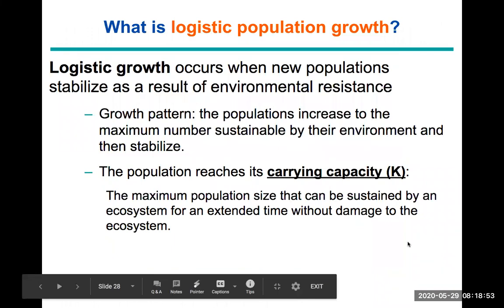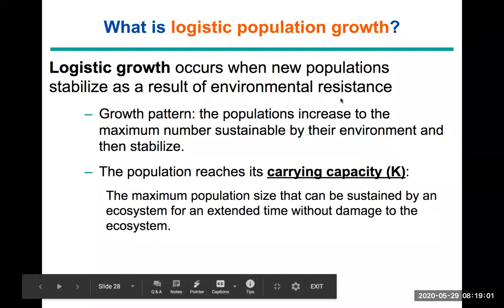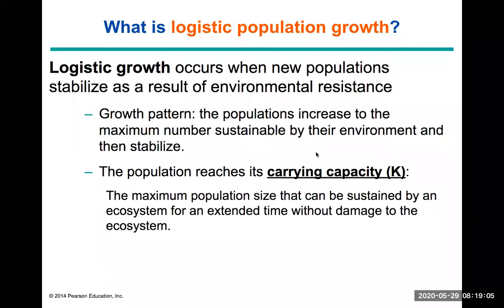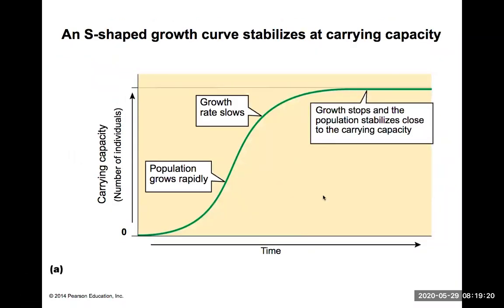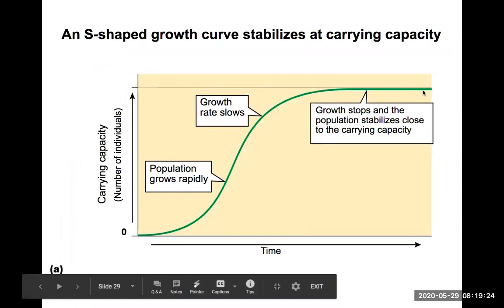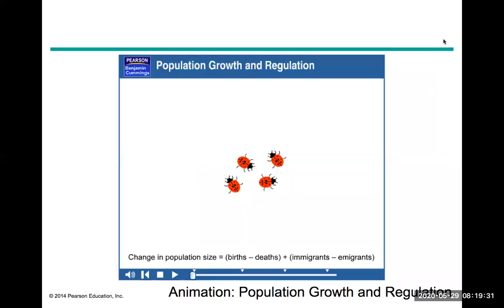Logistic growth occurs when new populations stabilize as a result of environmental resistance — that is, carrying capacity. When population size increases to a certain number, limiting factors begin to set in that cap the population at a particular size. This produces the S-shaped curve where the population stabilizes. An animation from the textbook publisher will now be shown to demonstrate how all these concepts, including the population growth formulas, come into play.